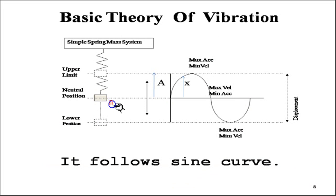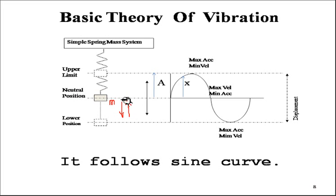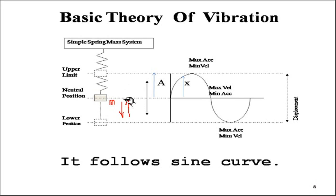Now let's understand the basic theory behind vibration. Consider a mass M attached to a spring. The neutral position is the reference. If I displace the mass downward and release it, it moves back and gains the neutral position, but does not stay there — the potential energy stored in the spring is converted into kinetic energy, causing the mass to move upward to the uppermost position.